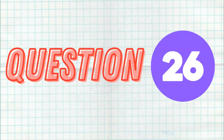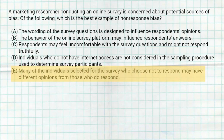Question 26 asks for the best example of non-response bias. Non-response bias is essentially when people do not respond, and why they're not responding may make them different from those that do respond. When we pick a sample, we want it to represent the population. If people in that sample don't respond, we're not learning something that might be true about the population. Those people may have a very different opinion than those who do respond, and if we allow that to happen, we'll never learn about that opinion — that's what causes non-response bias to be a problem.